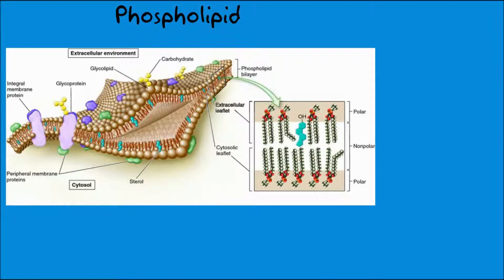The phospholipid molecules are arranged in two layers, which we call the phospholipid bilayer. Because of their polar and non-polar characteristics, they have two further properties: hydrophilic and hydrophobic. The polar regions are hydrophilic — meaning they love or attract water — and the non-polar regions are hydrophobic, meaning they repel water.